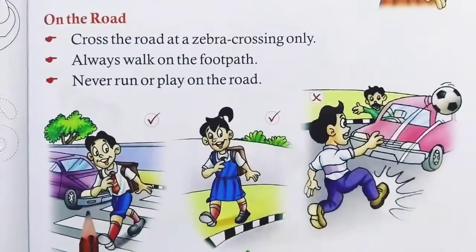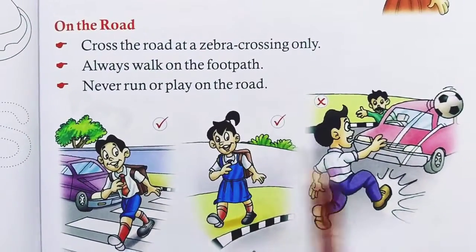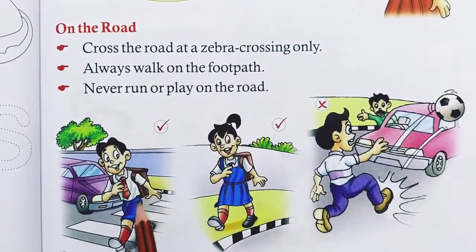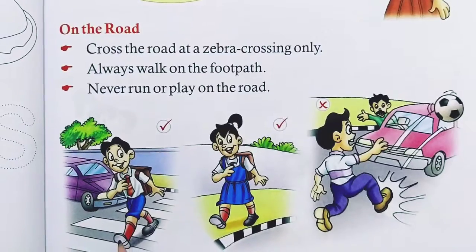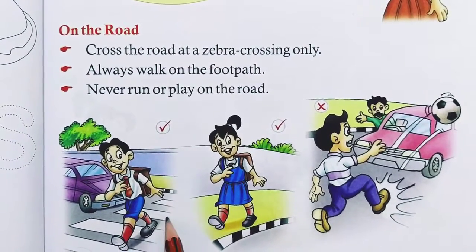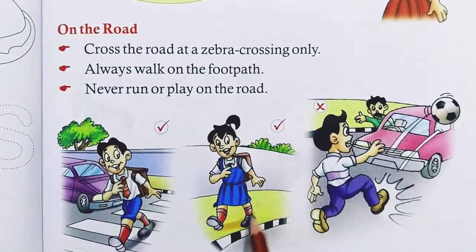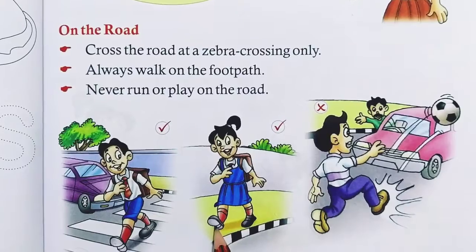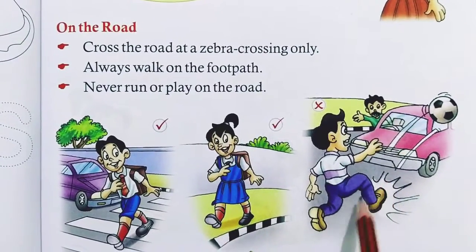First of all, you will see some children here. The boy is crossing the road on a zebra crossing. The girl is walking on a footpath. And the boy is playing on a road.